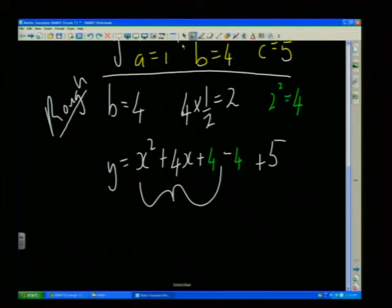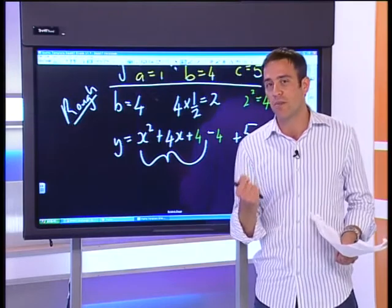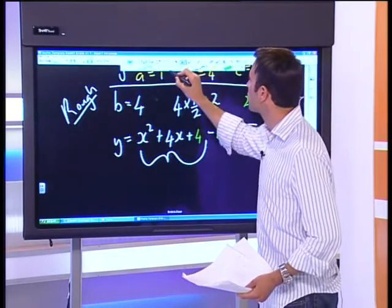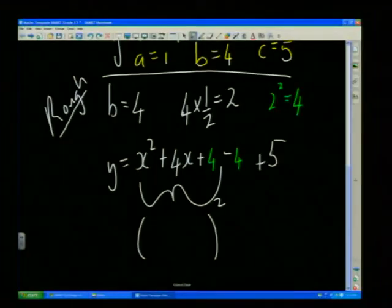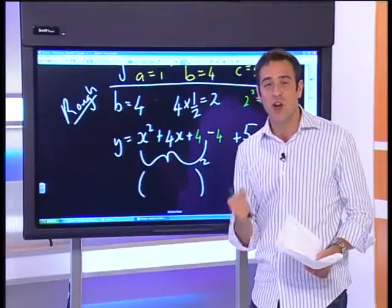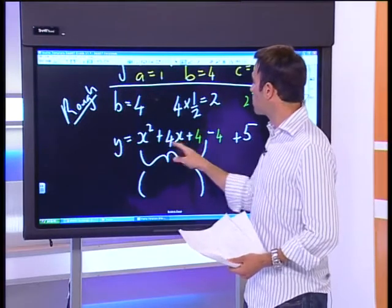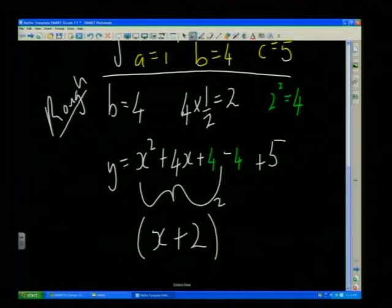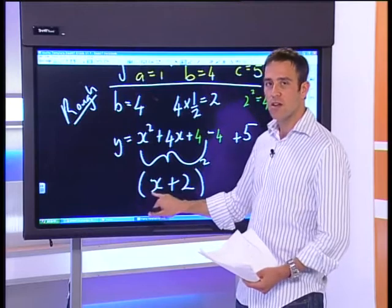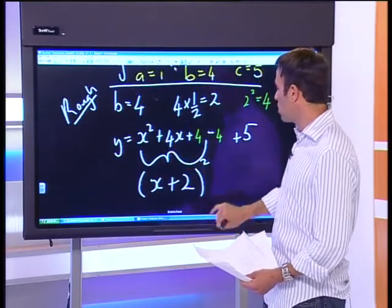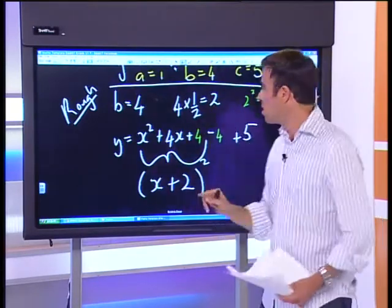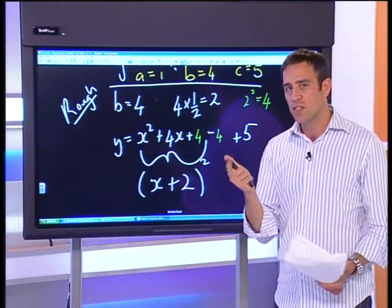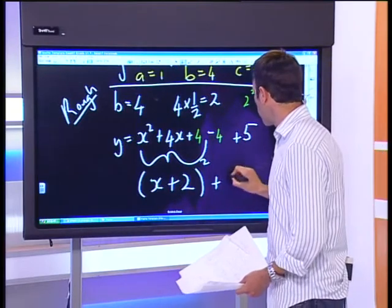If you add first and then subtract that squared value of 4, you will always end up with a perfect square from those first three terms. These three numbers will always give you a perfect square. So I can write x squared plus 4x plus 4 as (x plus 2) squared — because x squared plus 2x plus 2x is 4x plus 4. I still have plus 5 and minus 4, giving me plus 1.